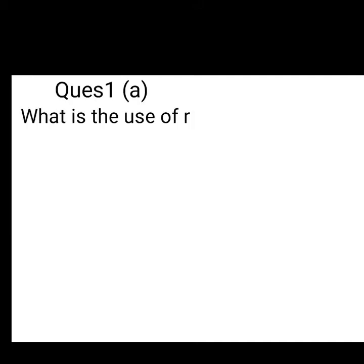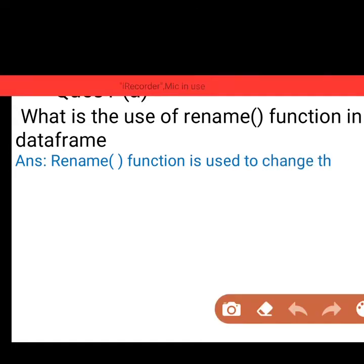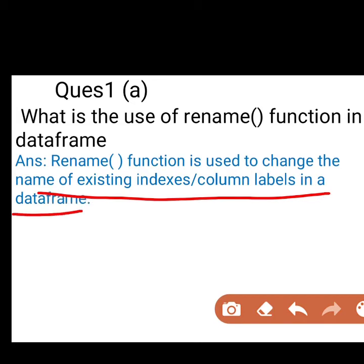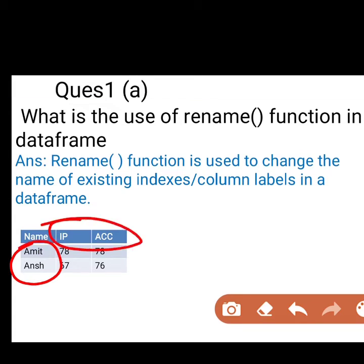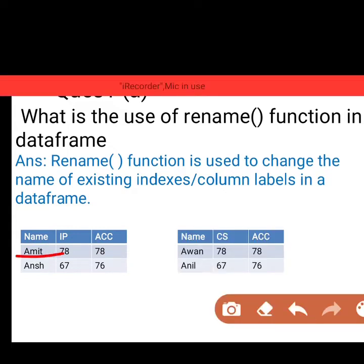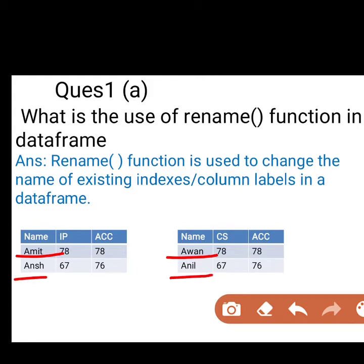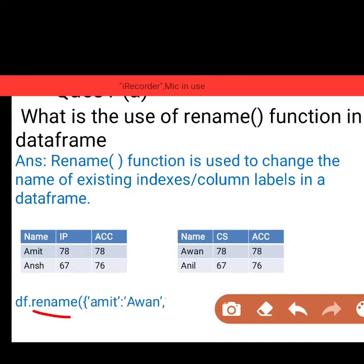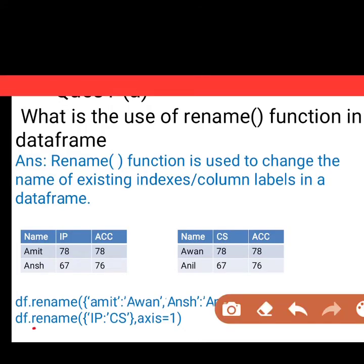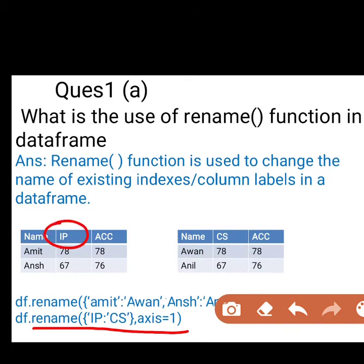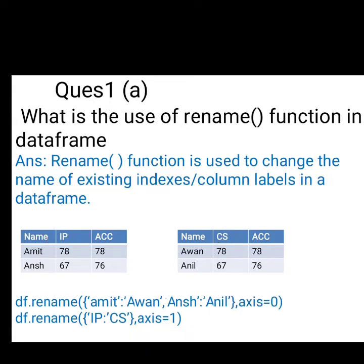Question first part a: What is the use of rename function in dataframe? Students, it is used to change the indexes or column labels of the dataframe. For example, suppose this is the dataframe given with indexes and column labels, and I want to change them. The index name Amit changes to Awan, Ansh changes to Anil, and the column label changes to CS. For this purpose, I can write df.rename with Amit colon Awan, Ansh colon Anil, along with axis equals 0, and for renaming the column label, IP colon CS with axis equals 1.